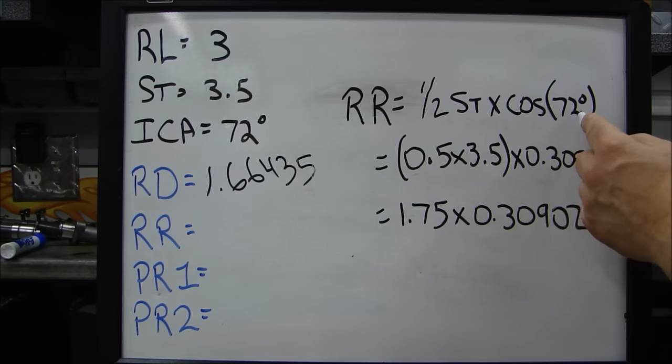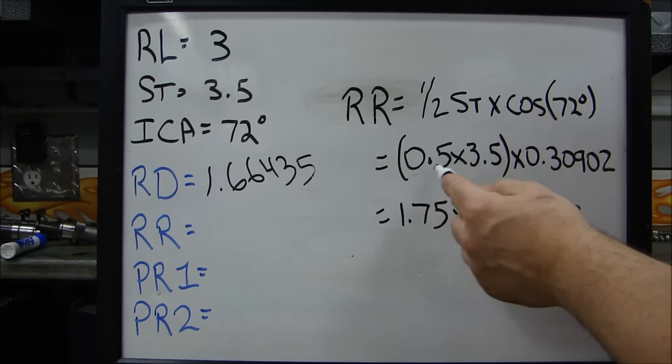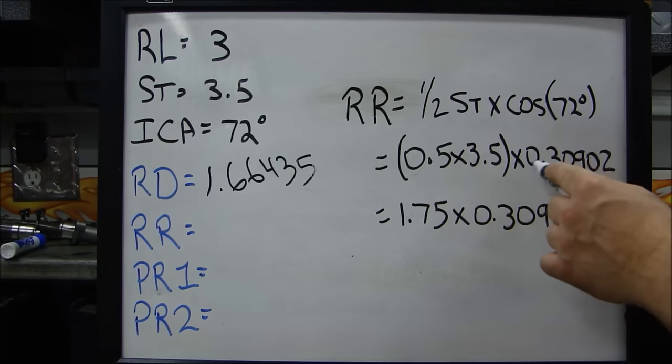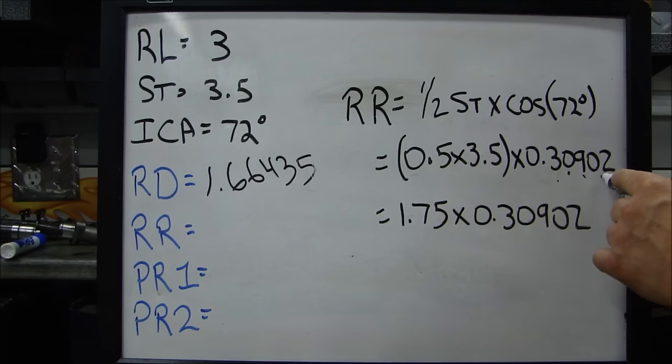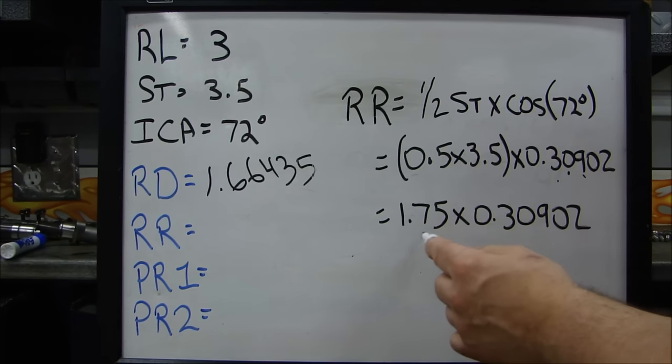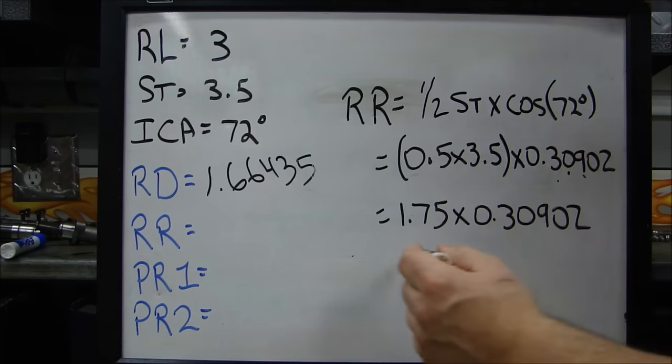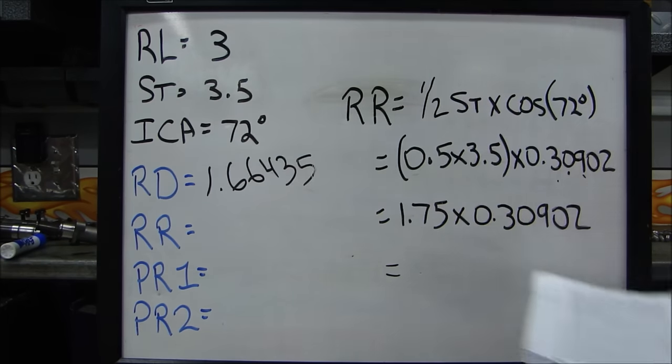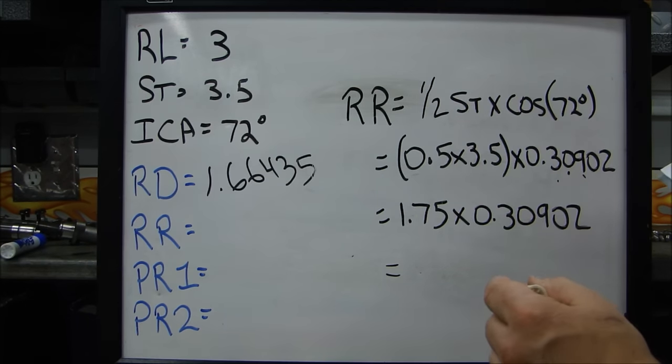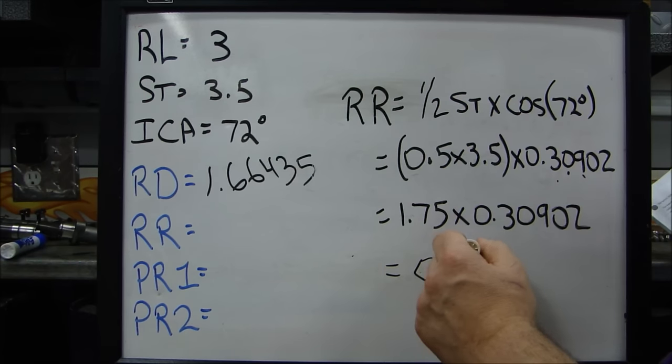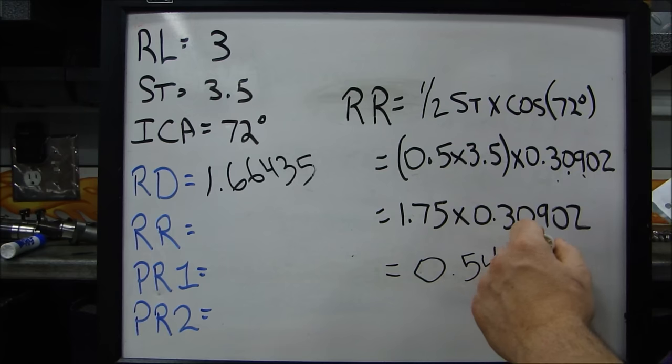But whatever your camshaft or your cam states, that's the angle you use. So it's one half of the stroke times the cosine of 72 degrees, which equals 0.5 times 3.5 times the cosine of this, which is 0.30902, which is 5 decimal places. That equals 1.75 times 0.30902. So that equals our RR for this one is 0.54078.